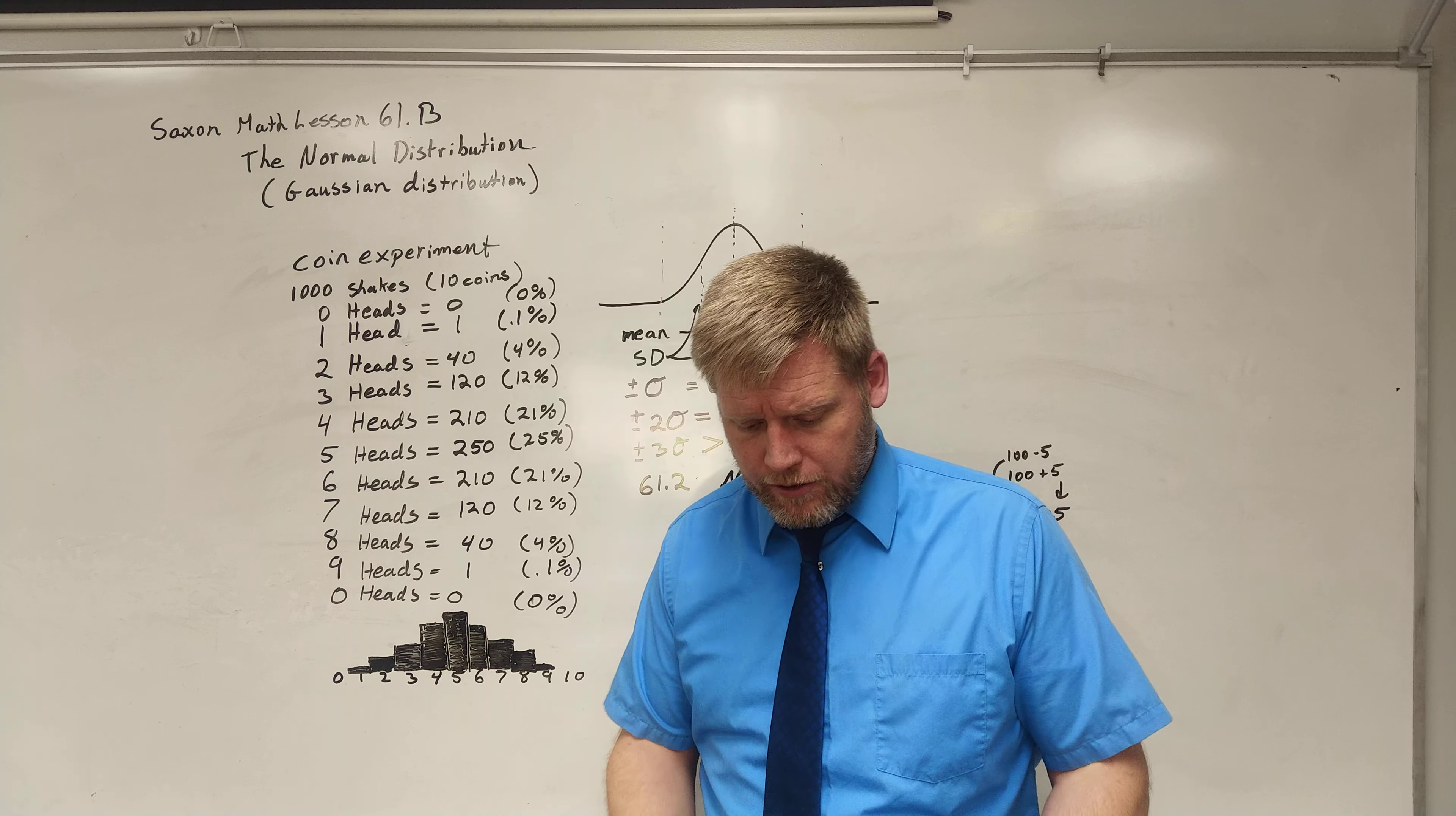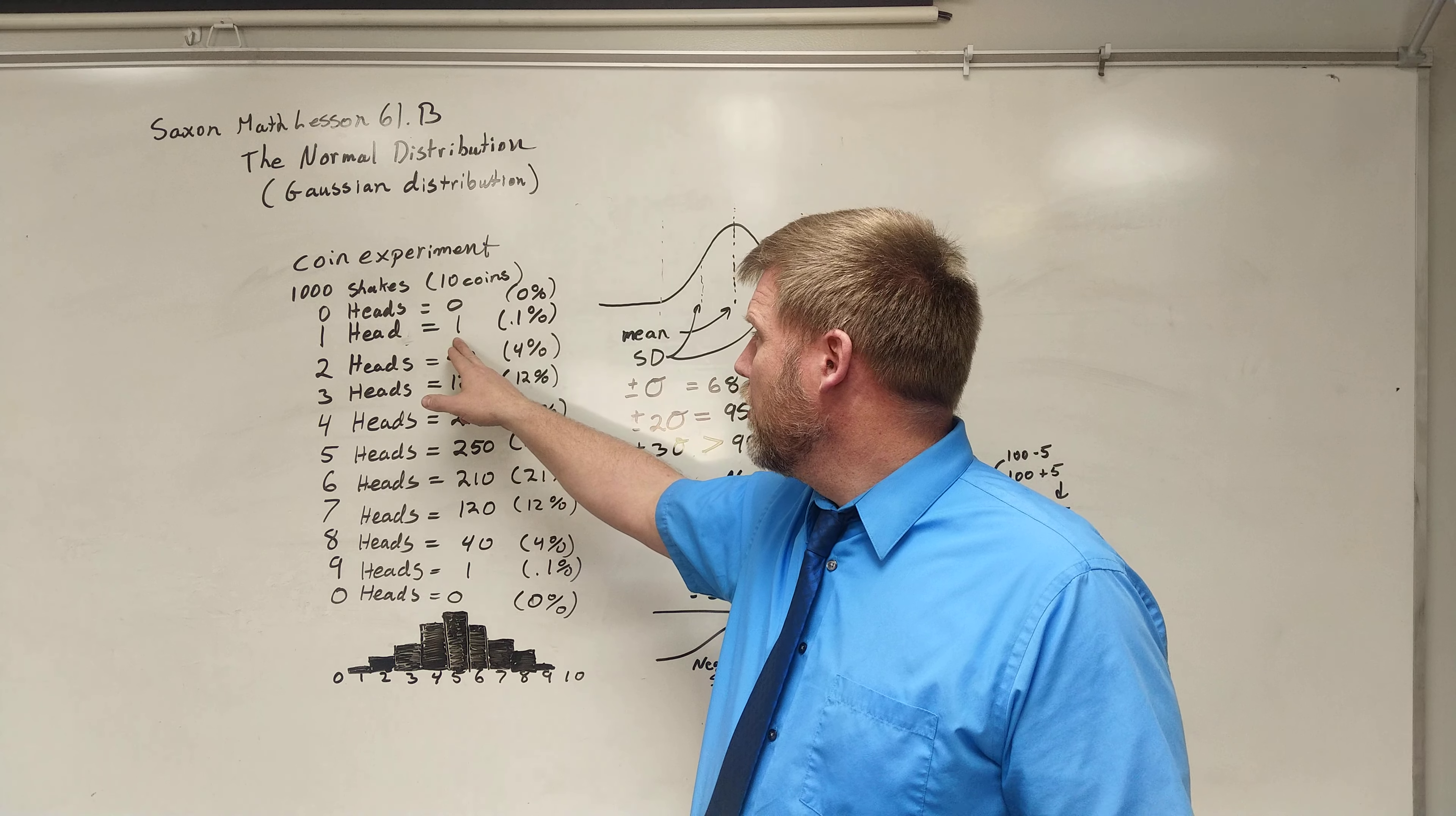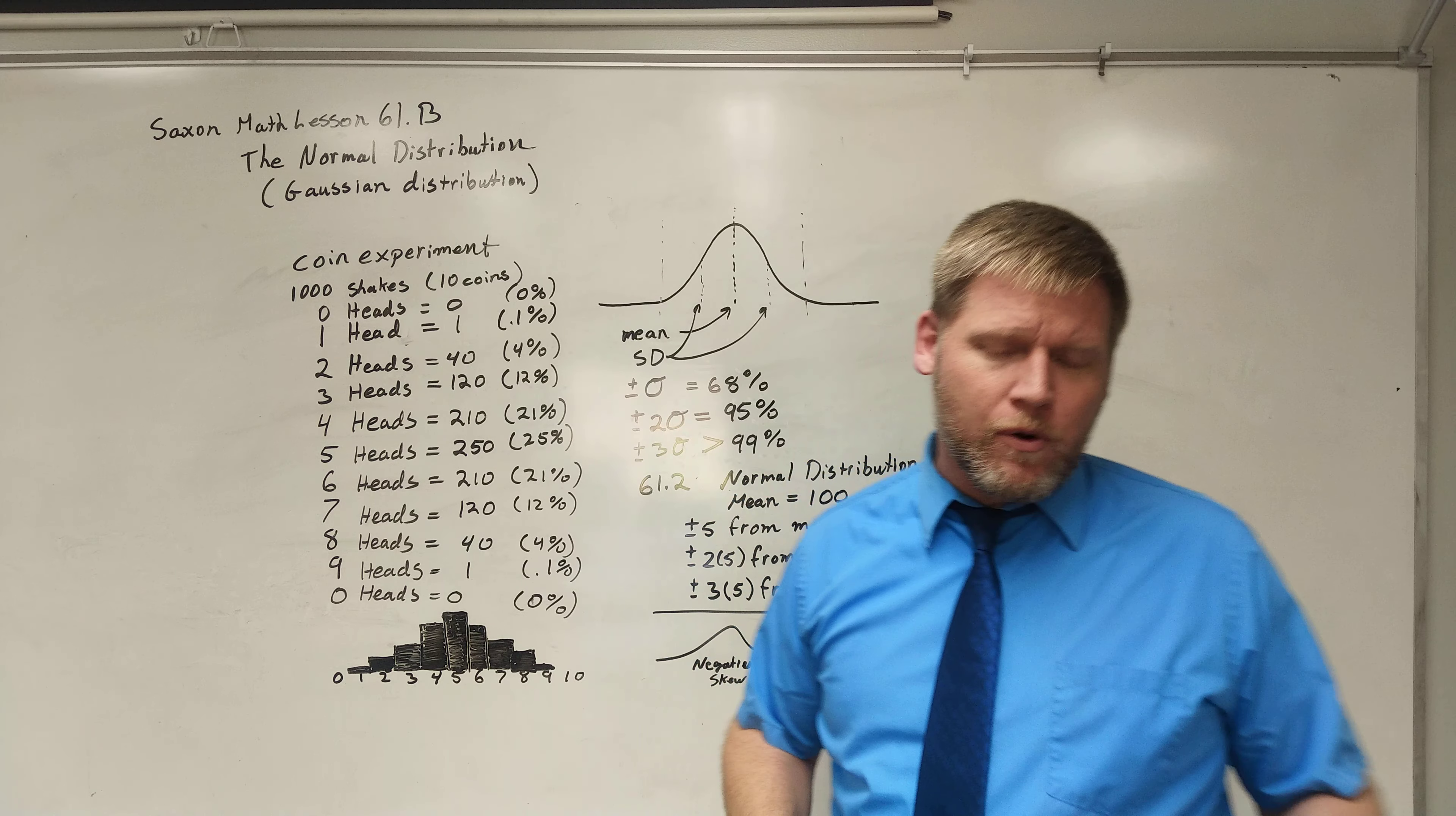So if I just kept shaking it, stopped, looked at it. Shook it, stopped, looked at it. And I recorded down how many of each one of those I get. I would say, well, one head, I get about one shake out of the thousand shakes. And that's going to be about 0.1%, where I would have two heads of the 10 coins. So eight tails, two heads. About 40 of those or about 4%. And you look at these numbers and where are these coming from?